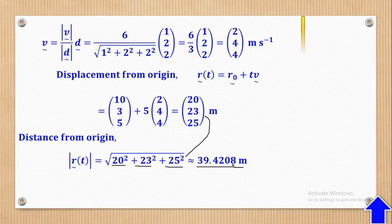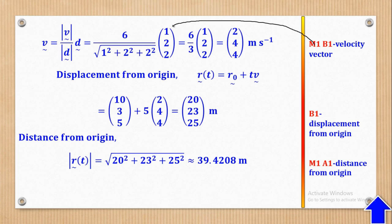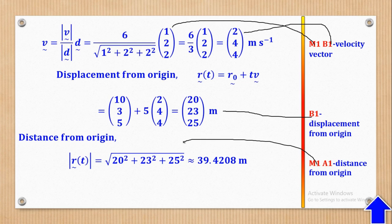Now let's see how marks can be awarded. M1 is for substituting in the formula to convert from magnitude to vector form, and B1 is for getting the velocity vector. Then B1 is for getting the displacement from the origin, M1 is for substituting in Pythagoras' theorem, and A1 is for getting the final output. That's how the 5 marks come about.